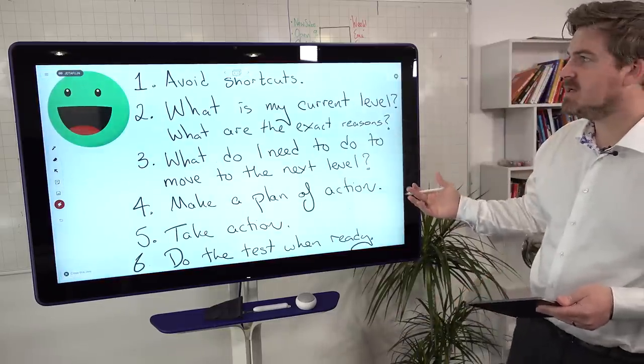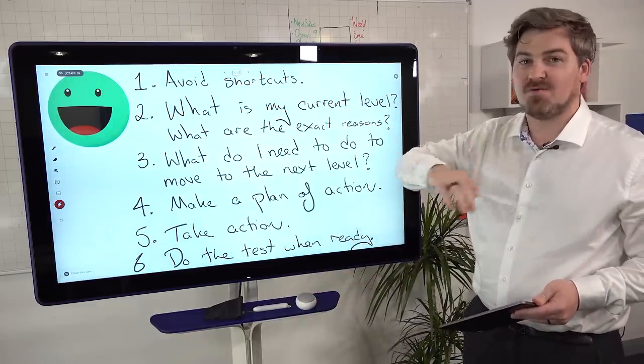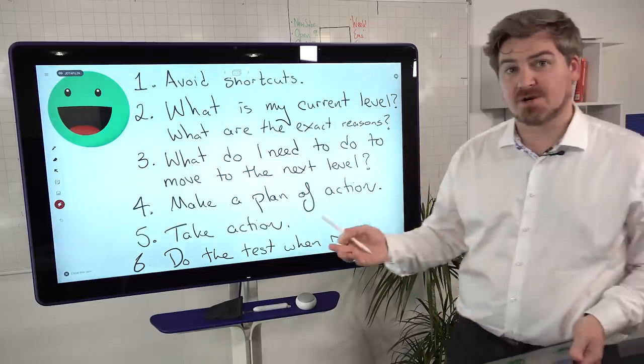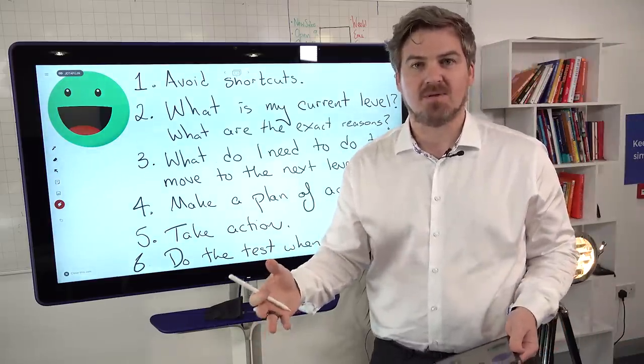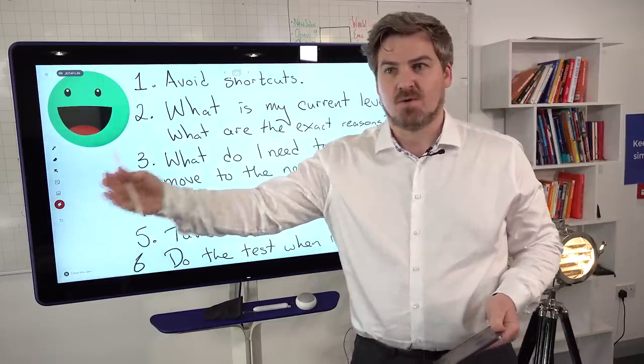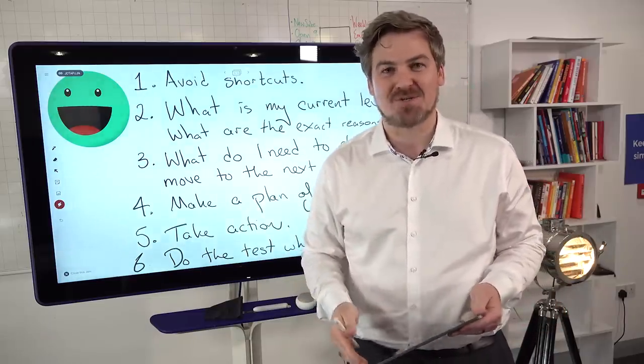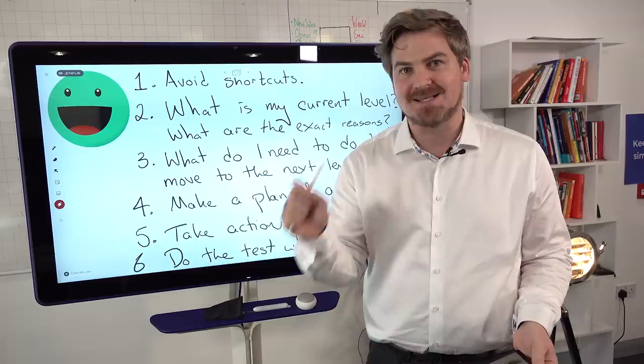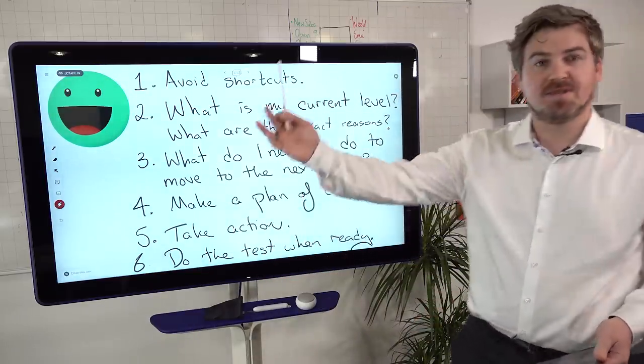So just to summarize, if you want to get the score that you need in the fastest possible time, avoid shortcuts, avoid tips and tricks and hacks and all of those things, ask yourself, what is my current level? Where am I right now? What are the exact reasons why I'm at that level? So if you're at 6.5 for writing, instead of doing the test over and over and over again, or trying some YouTube video that teaches you the secrets to getting a band nine or some nonsense like that, just show it to someone who knows what they're talking about. And they will tell you the exact reasons why you're not getting the score that you need.